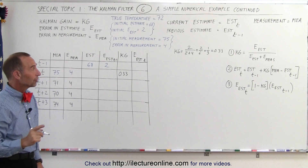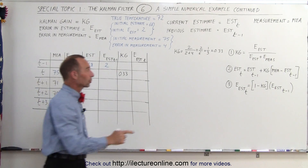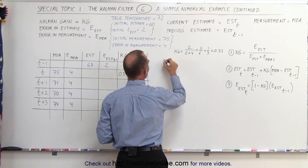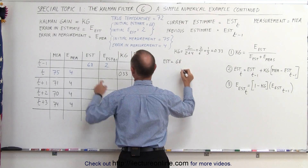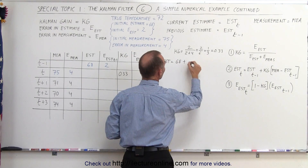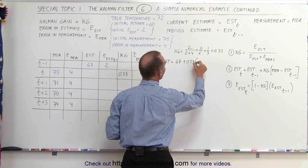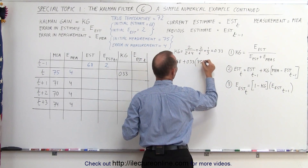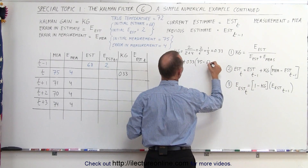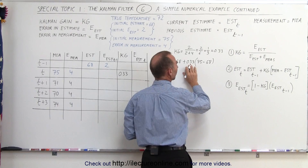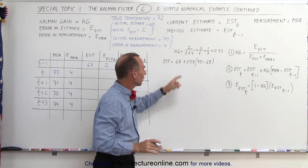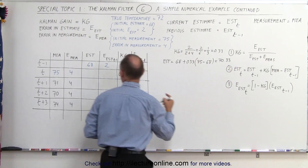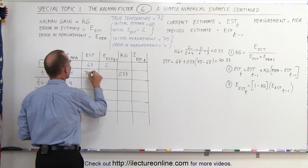From that we should be able to calculate an updated estimate. The current estimate is equal to the previous estimate of 68, plus the Kalman gain that we just calculated, 0.33, times the difference of the measured value, which is 75, minus the previous estimate of 68. So the difference here is 7; one-third of 7 is 2 and a third, add it to 68, that gives us 70 and a third, or 70.33, and that would now be the new estimate.